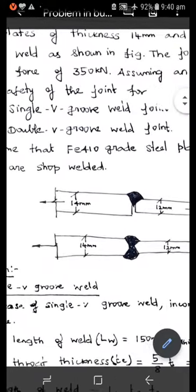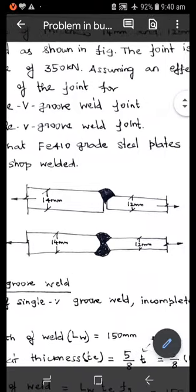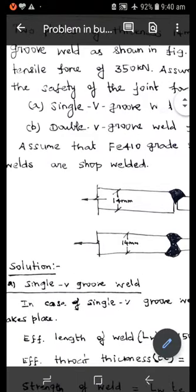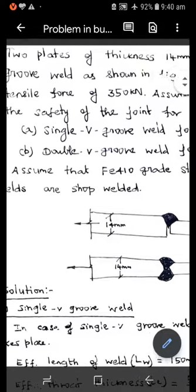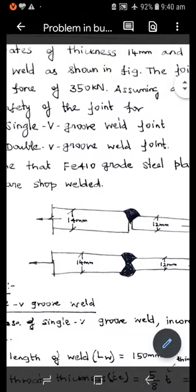first case single V groove weld joint, then B, second case is double V groove weld joint.